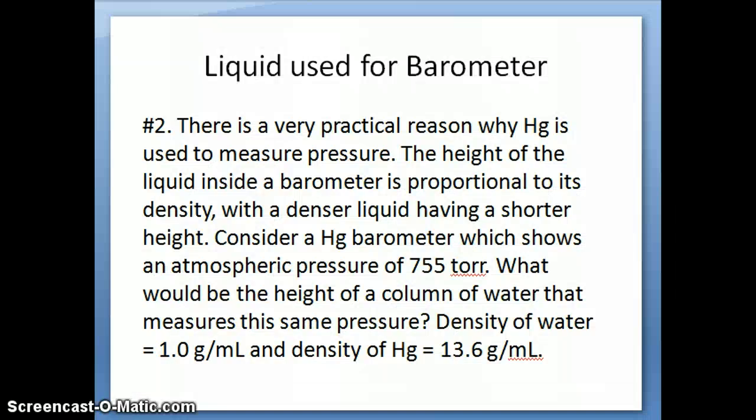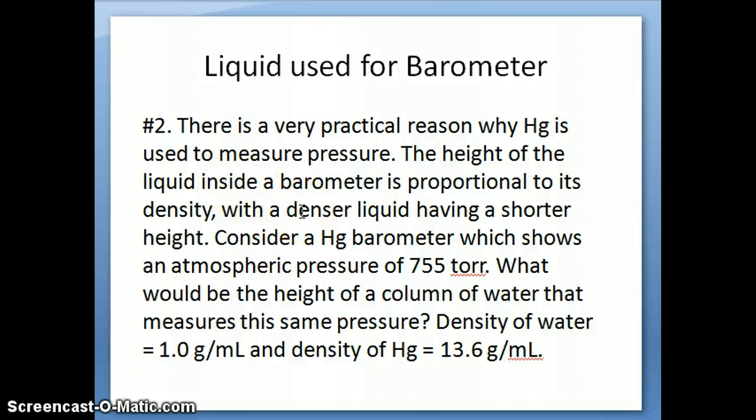I hope you now have an appreciation for how a barometer works using mercury. Now consider question number two on this gas pressure video, which you should answer on the form available next to the videos. The question discusses why mercury is used for a barometer. Mercury is toxic — there are vapors you really don't want to breathe and it can cause various types of poisoning. However, there is a practical reason why mercury is chosen: the height of the liquid inside the barometer is proportional to the density of the liquid.